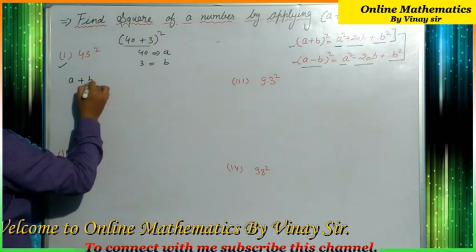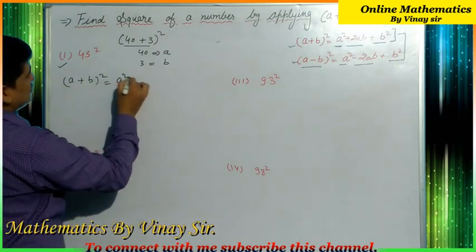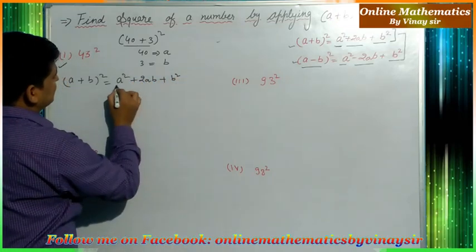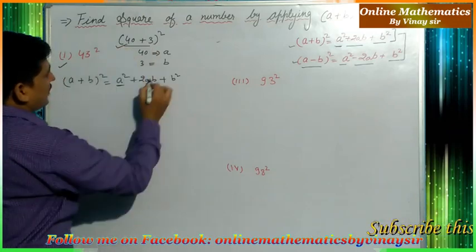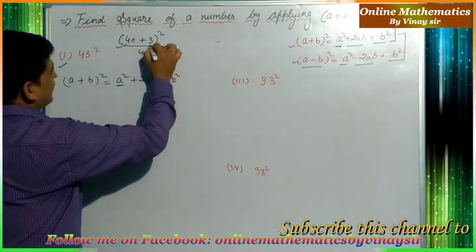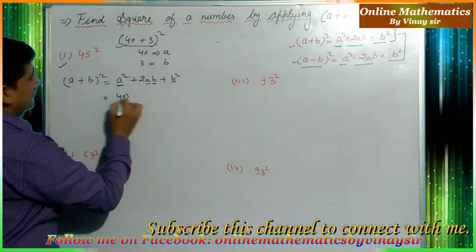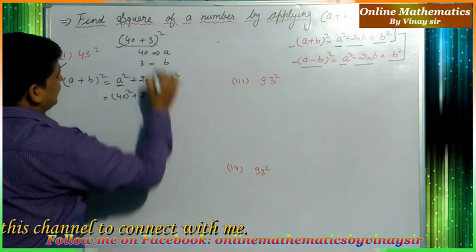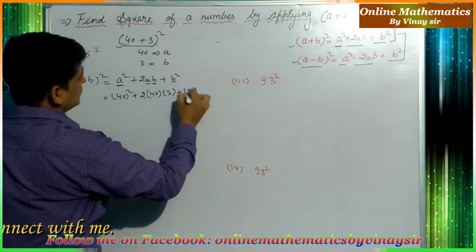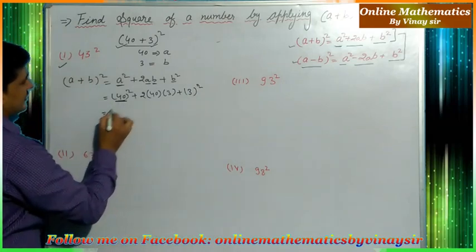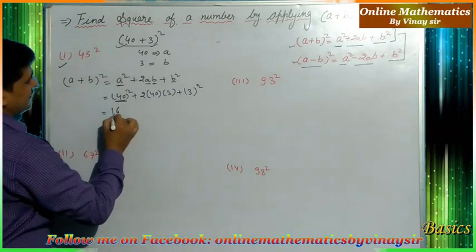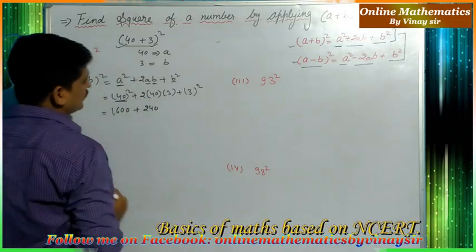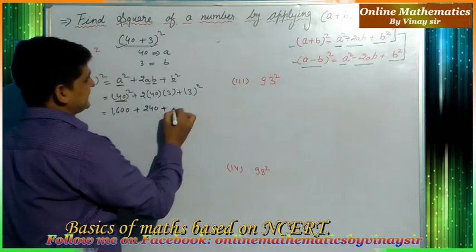We know that (a+b)² = a² + 2ab + b². Substituting, we write 40² + 2×40×3 + 3². The square of 40 is 1600. Then 2×40×3 gives us 240. And 3² is 9.